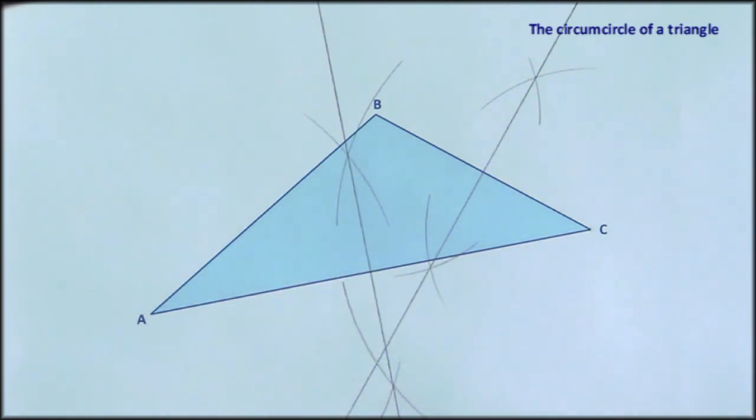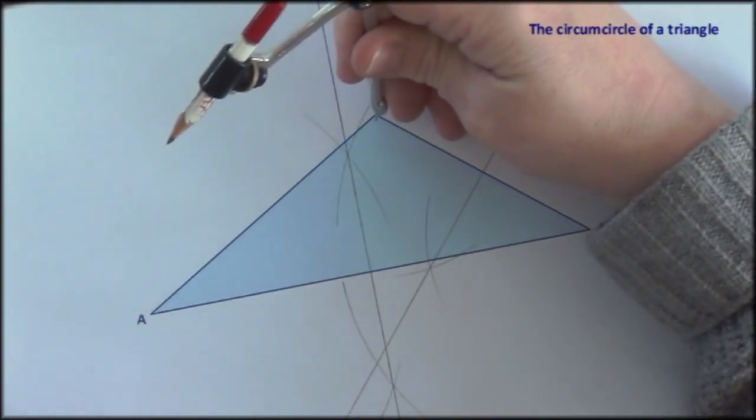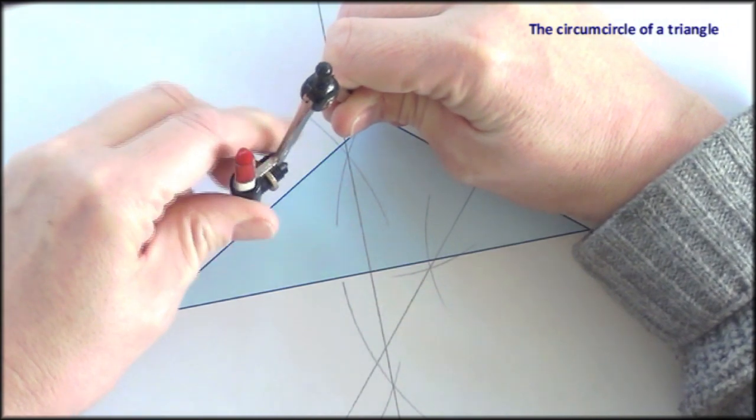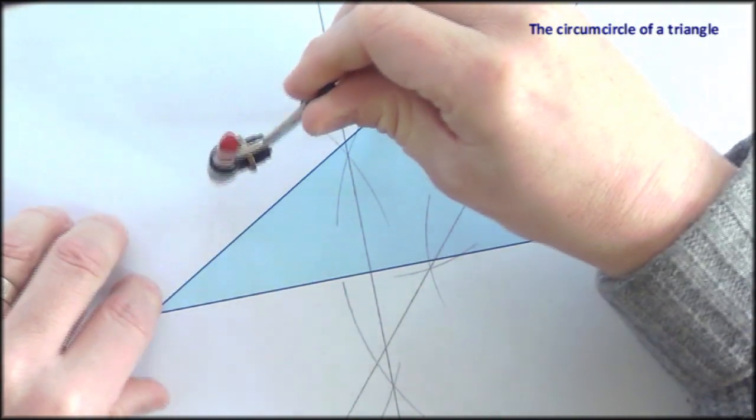And finally side AB. Probably don't need the compass quite as wide for this one. So let's just reduce that a little bit.